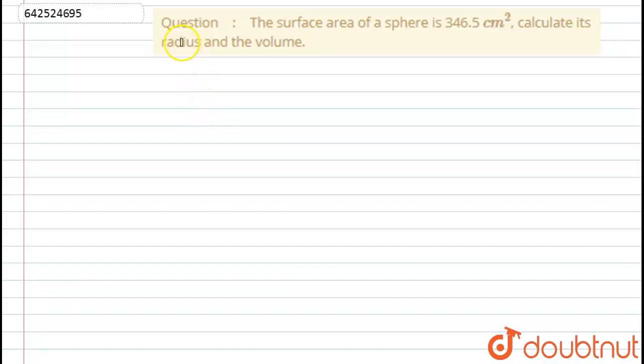Hello student, let's start with the question. Here we have given the surface area of sphere is 346.5 cm² then calculate its radius and volume.